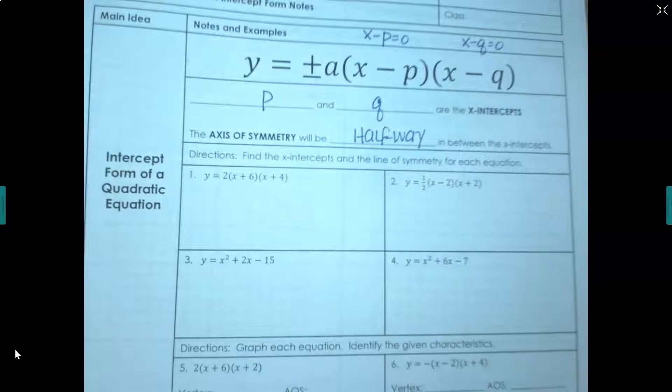We're going to be using Desmos. Make sure you have it available on your phone or computer and we're going to go ahead and try this. We're going to take this equation, 2 times x plus 6 times x plus 4, and we're going to put this into Desmos and look at this. But before we do,